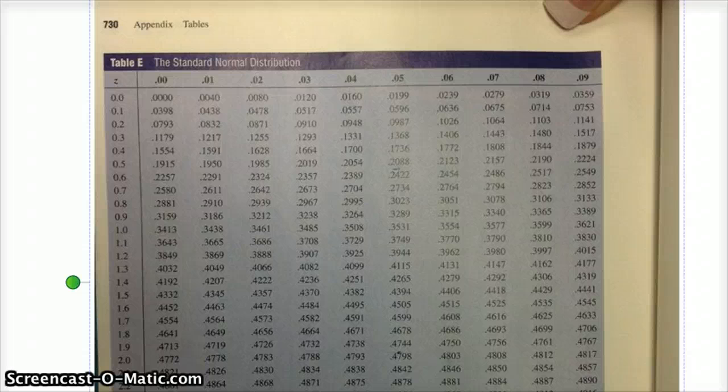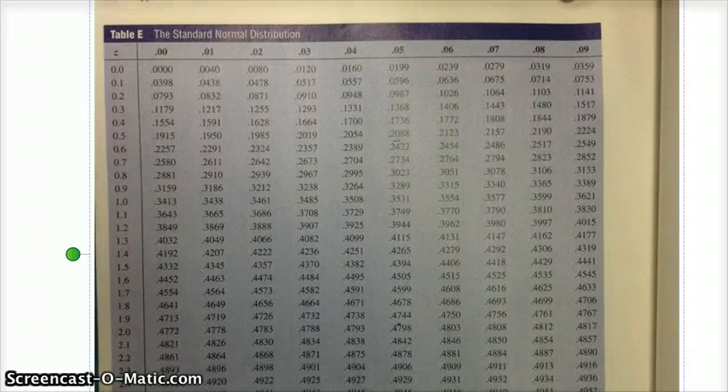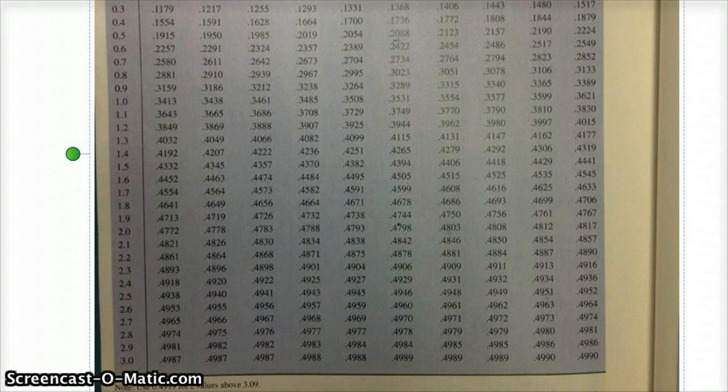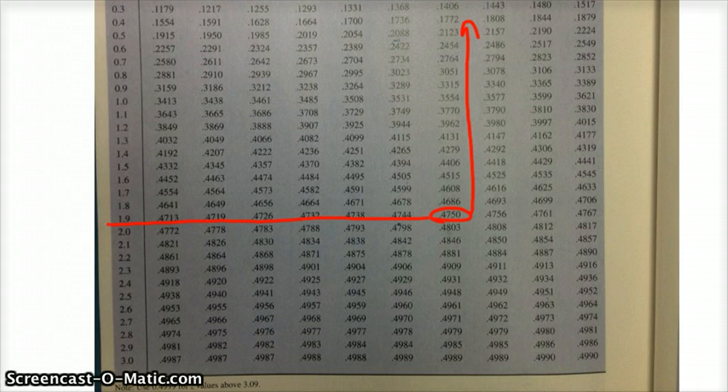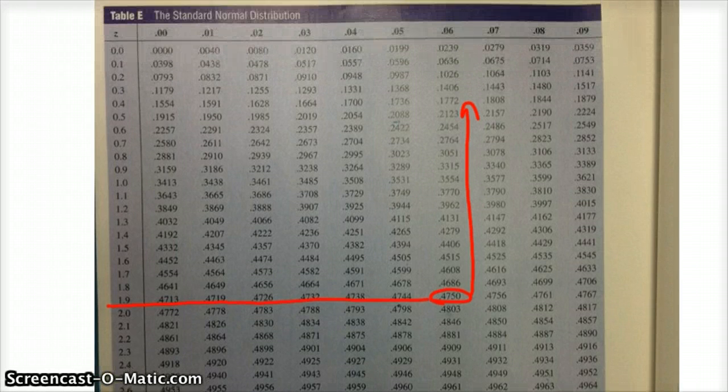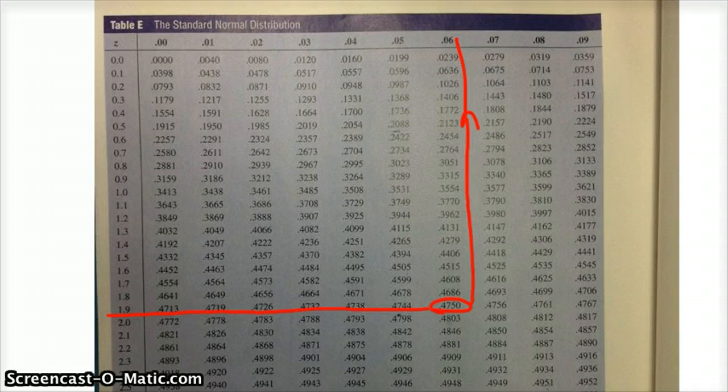Or you could go online again, and there is 0.475. And you follow it up, and you follow it right. So we're looking at 1.9, and this would be 1.96 for a z-score.